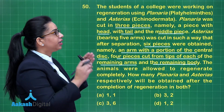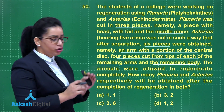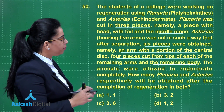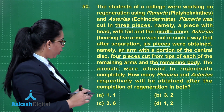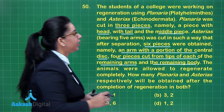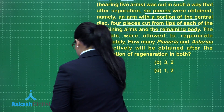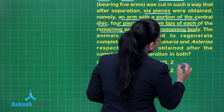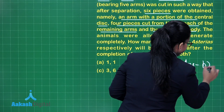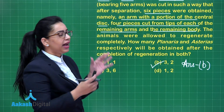So we will get 3 planaria and 2 Asterias, or 2 starfish. Looking at the options: option A says 1,1; option B says 3,2; option C says 3,6; and option D says 1 and 2. The answer is option B — we get 3 planaria from 3 pieces and 2 starfishes from the first and the last piece.